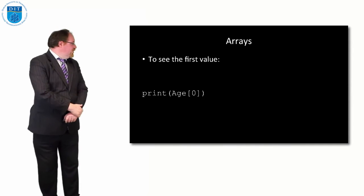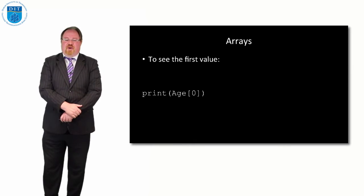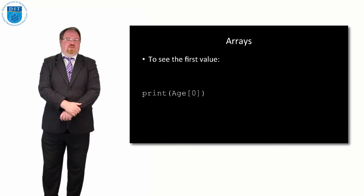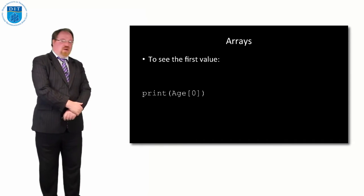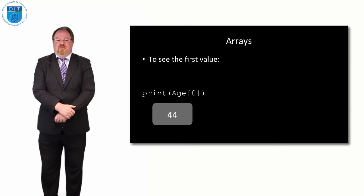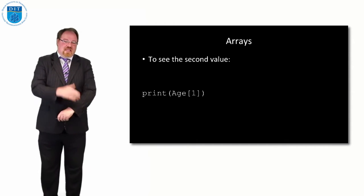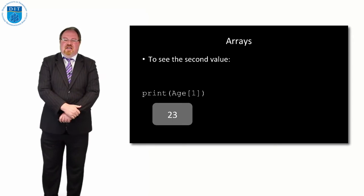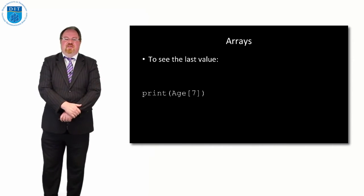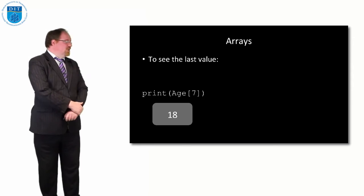To see the first value in the array, I type: print(age[0]). To print out 44 from the array I can use age[0]. If I say print the second value, age[1], it'll print out 23. And if I want to print out the last value, age[7], it'll print out 18.